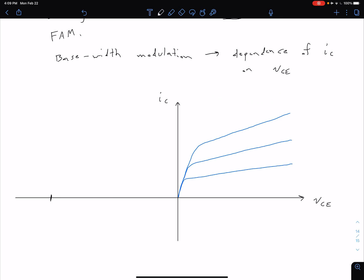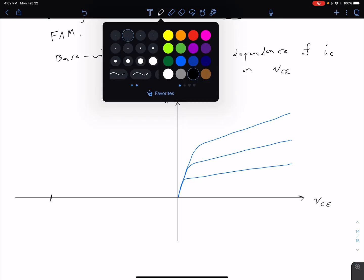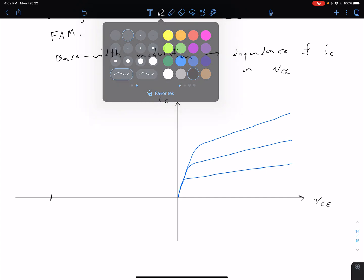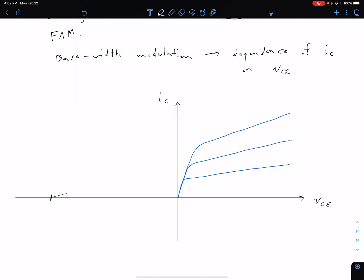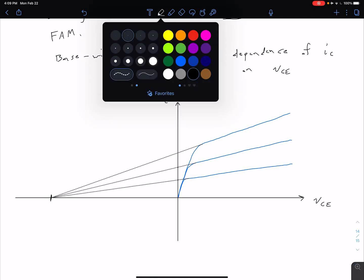And so what we can see is actually if we extrapolate these back to some point on our voltage axis, we see that they all intersect the axis at the same point. And so this point is related to a special value called the early voltage.